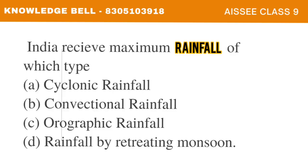The next question is: India receives maximum rainfall of which type? A. Cyclonic rainfall, B. Convectional rainfall, C. Orographic rainfall, D. Rainfall by retreating monsoons. This question is from the topic on types of rainfall in your Social Science syllabus. The correct answer is Option C: Orographic rainfall. India receives the maximum rainfall of the orographic type.